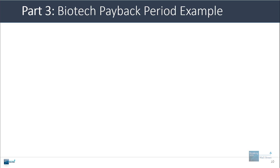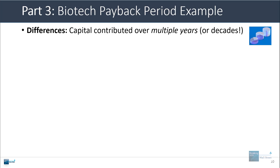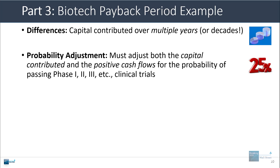Let's look at a quick biotech example. There are a couple of differences here. One is that the capital is often contributed over multiple years or even decades — in project finance with solar or wind it's typically only one to three years, but in biotech you can see a five to ten year investment period. You also have to make probability adjustments because drugs could pass or not pass phase one, phase two, and phase three clinical trials. You have to adjust both the capital contributed and the positive cash flows, which is something you don't really do in project finance.